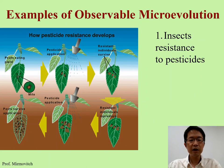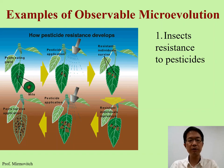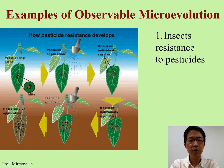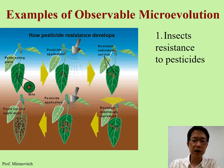So let's take a look at microevolution first. Microevolution has several famous examples. For example, this one here — insect resistance to pesticides.